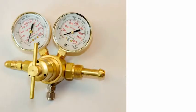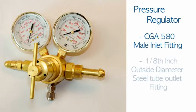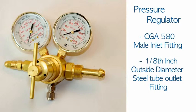If you've purchased a pressure regulator from NEXT ADVANCE, it comes equipped with a CGA 580 male fitting on the inlet and an eighth-inch outside diameter steel tubing fitting on the outlet.